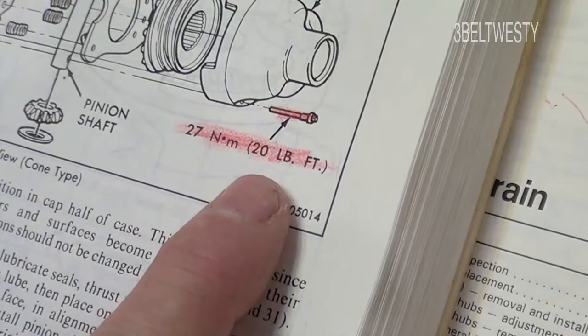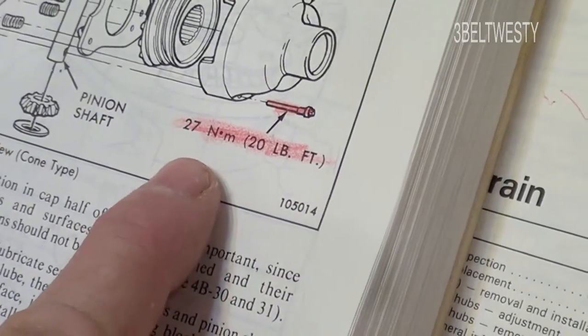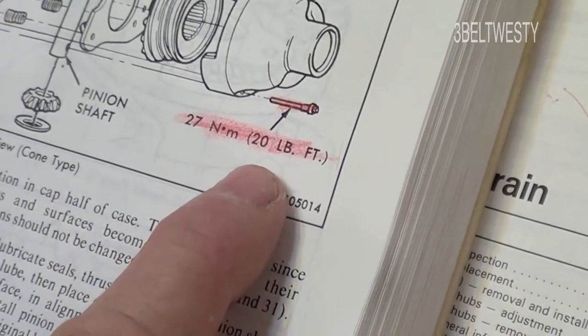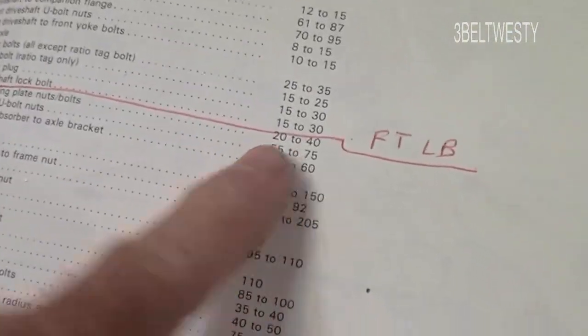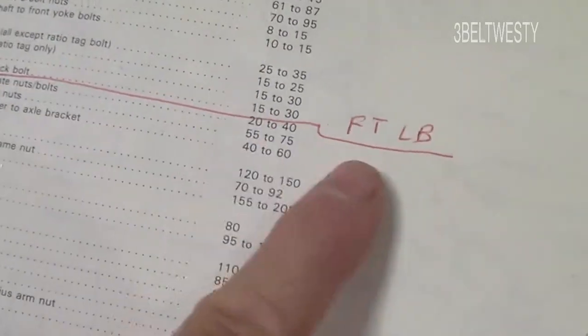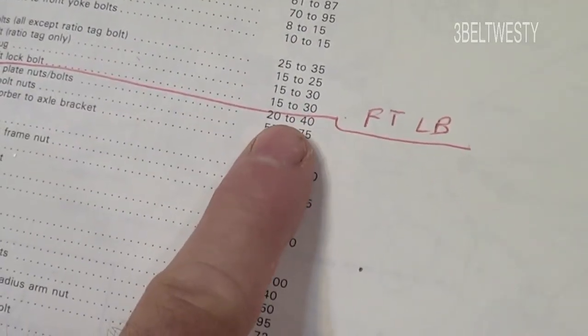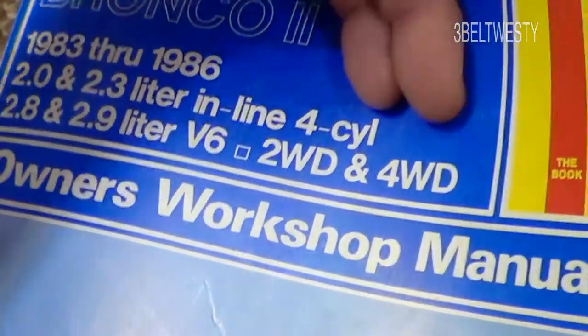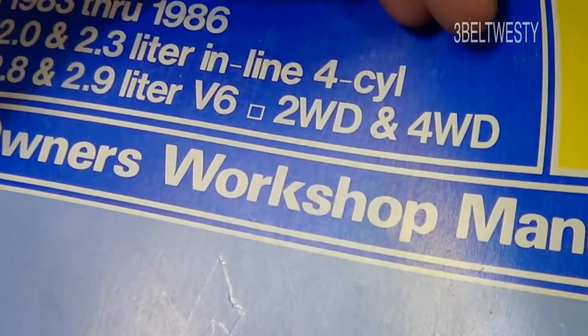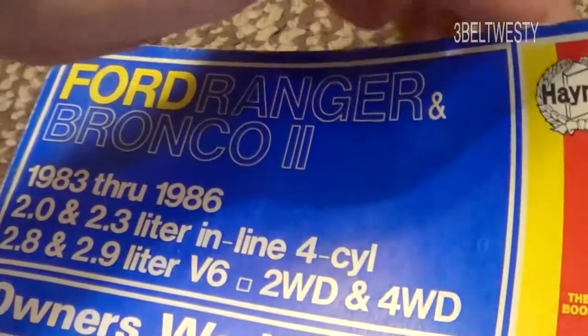That holds the pinion shaft in—27 newton meters, 20 pound-feet. Over here in the Ford Ranger book, it says 15 to 30. This is a Haynes manual from 83 to 86.